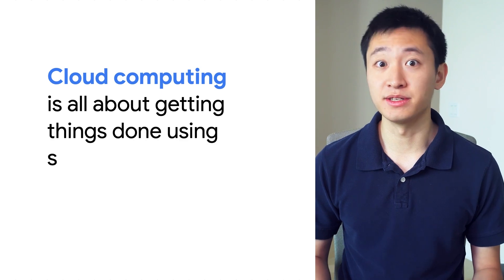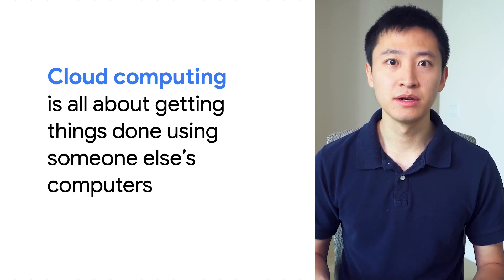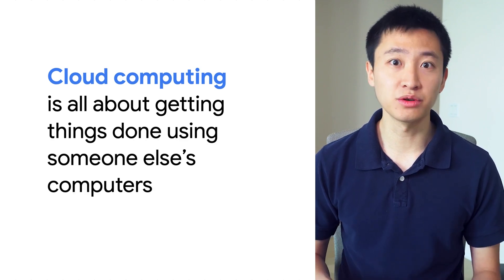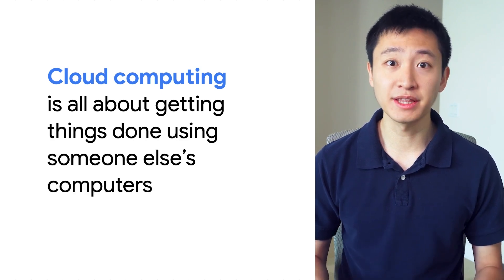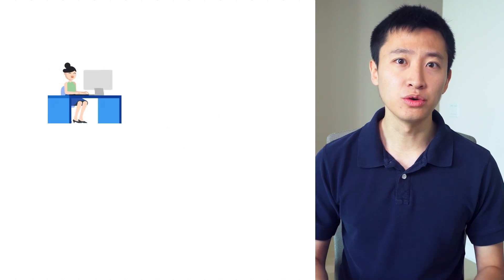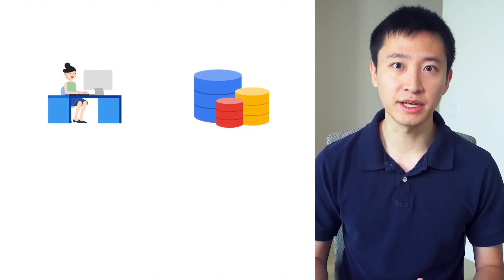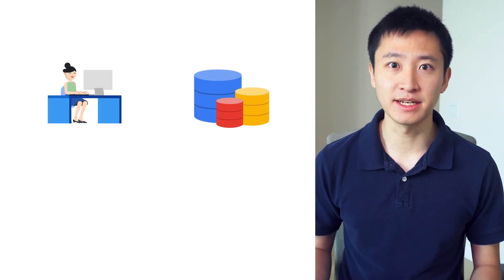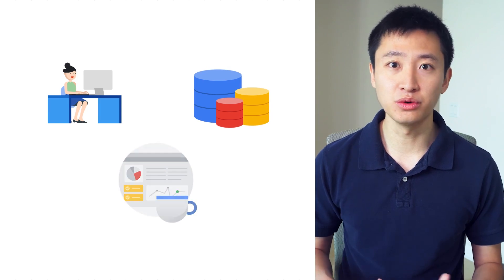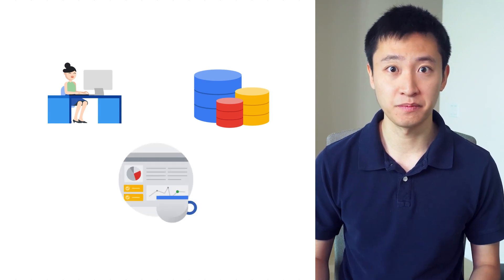Cloud computing is all about getting things done using someone else's computers. So when you use Google Cloud, you're getting things done using Google's computers. Google Cloud lets you build and host applications, store data, and analyze data, all in Google's highly scalable and reliable computing infrastructure.